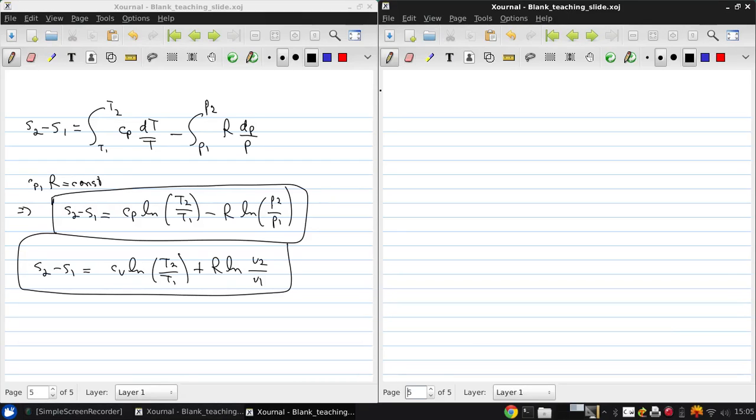Okay, now that we have a convenient form for the second law, or for changes of entropy in terms of other properties, we can start looking at what happens if entropy doesn't change, what we call the isentropic relations.